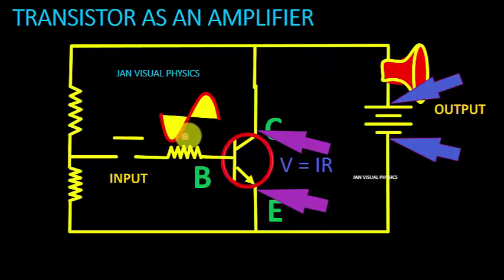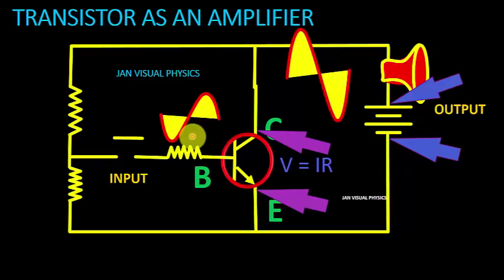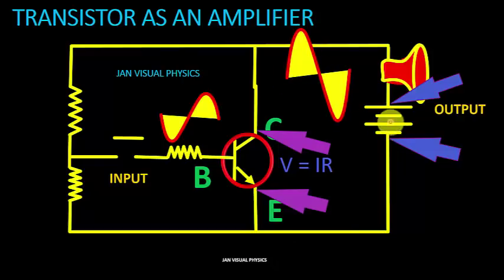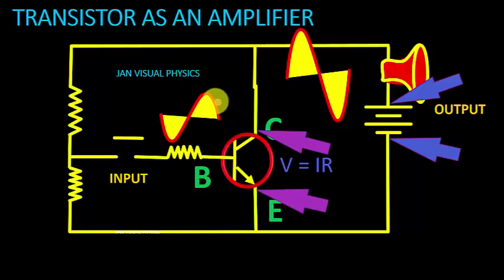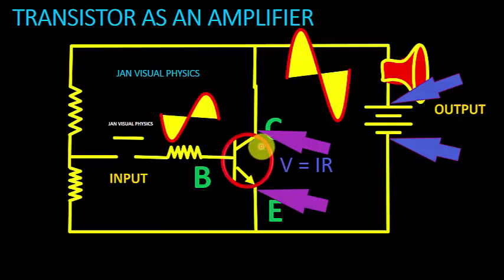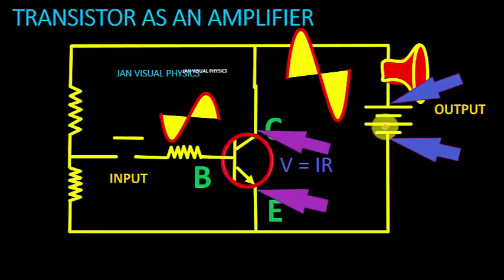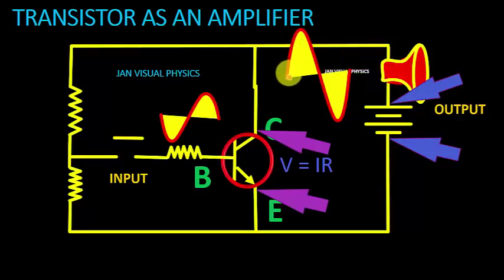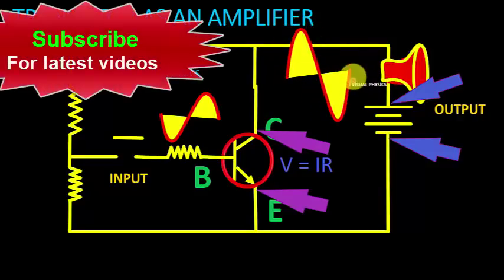When a small signal is applied at the base of the transistor we get a large signal at the output of the transistor. This signal comes from our source voltage due to the switching action of the transistor. During the first positive half cycle the transistor switches on, while during the next half cycle the transistor switches off, and this way the voltage is controlled by the transistor at the output and we get a large sinusoidal signal at the output.